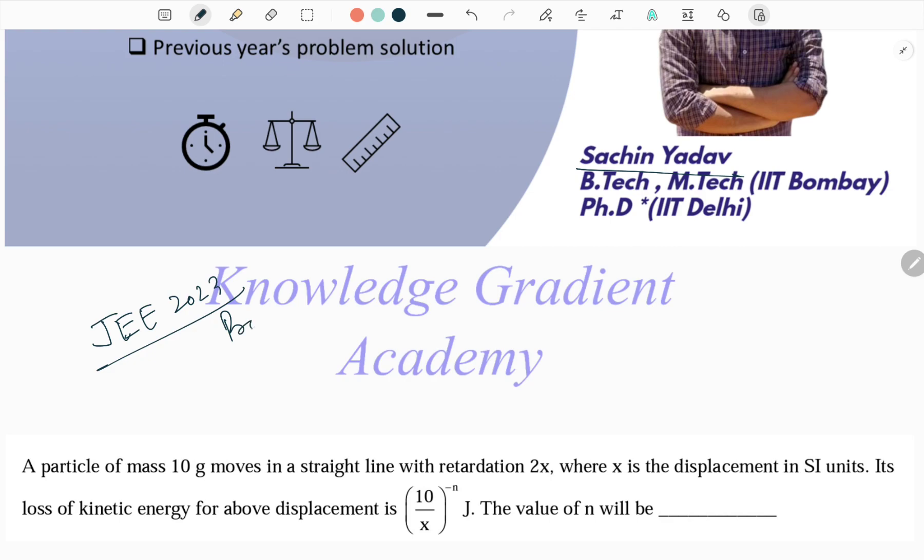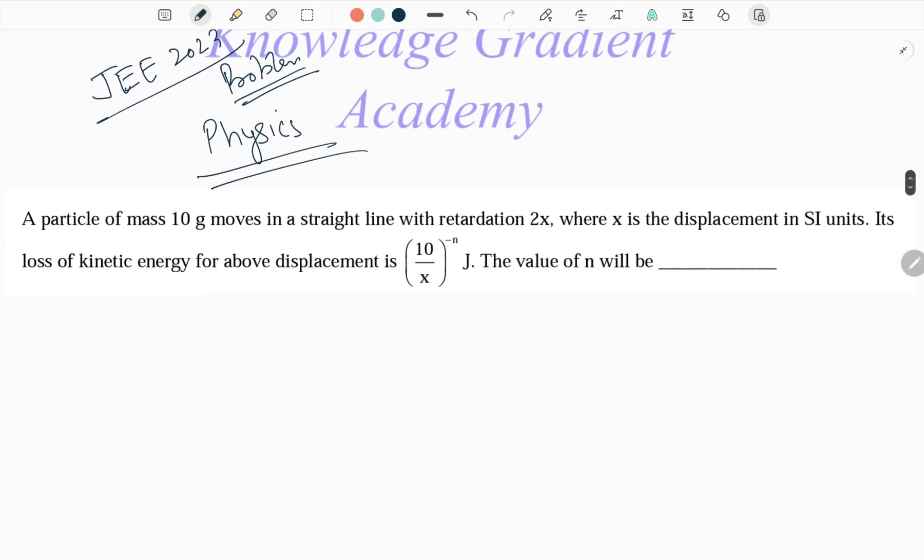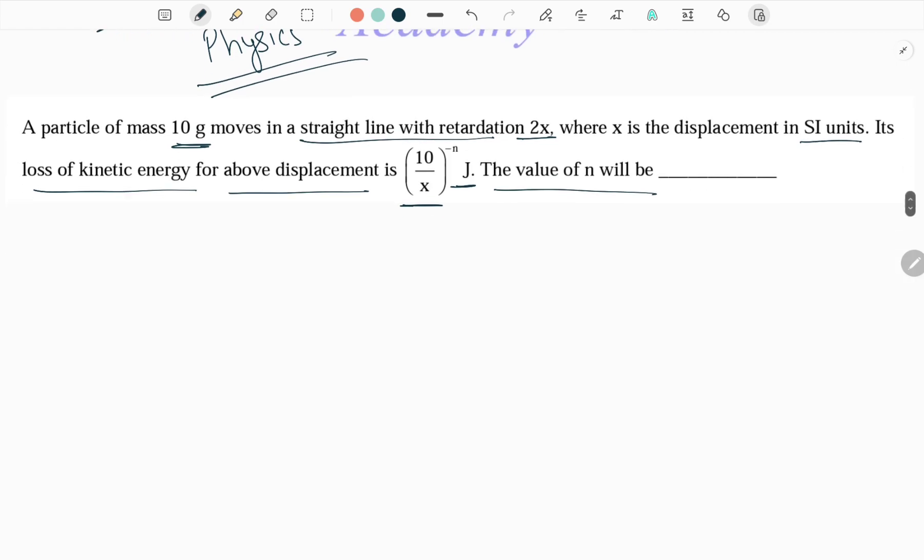This is from the physics section. A particle of mass 10 gram moves in a straight line with retardation 2x, where x is the displacement in SI units. Its loss of kinetic energy for above displacement is (10/x)^n joules. Find the value of n.